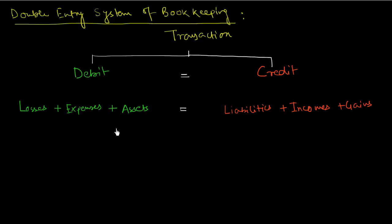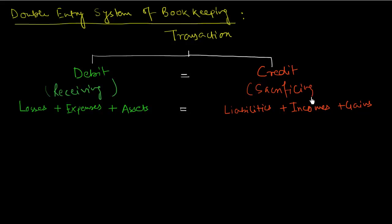In the last video we learned that both aspects of a transaction have equal value. One aspect is the debit aspect — also called the receiving aspect — and the other is the credit aspect, also called the sacrificing aspect. Under the debit aspect we group all losses, expenses, and assets, and under the credit aspect we group all liabilities, incomes, and gains.